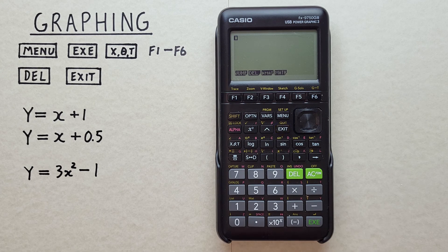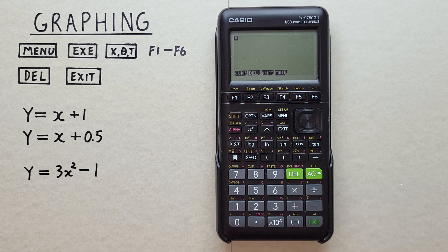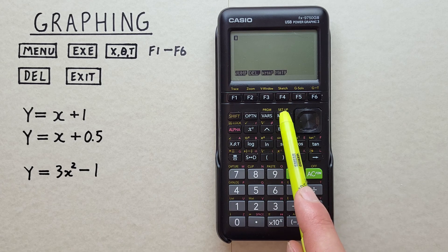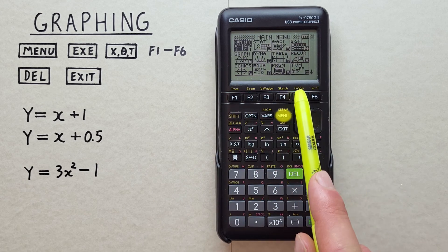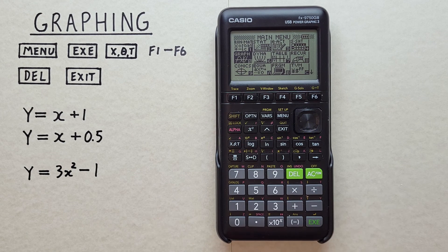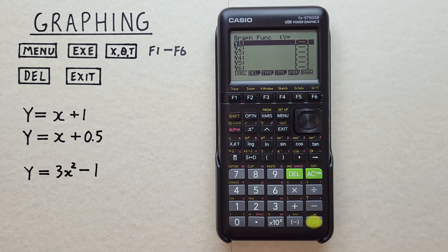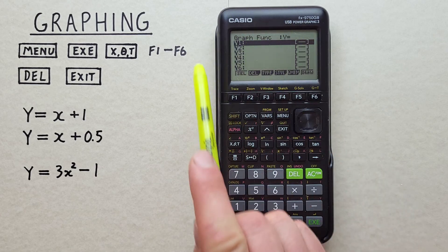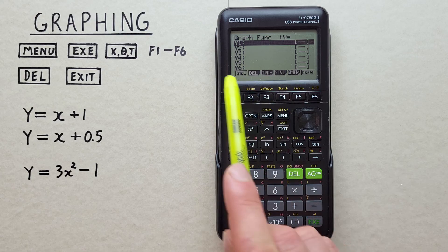To get started first we need to go to the graphing app. To do that we want to hit the menu key to bring us to the main menu and then scroll down to the graph app, select it with the EXE. And there we go. That brings us to our graphing function menu where we can enter our functions.